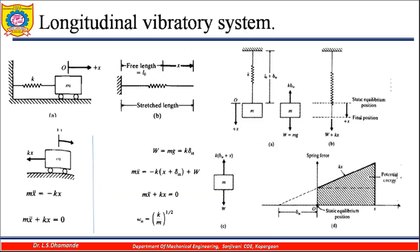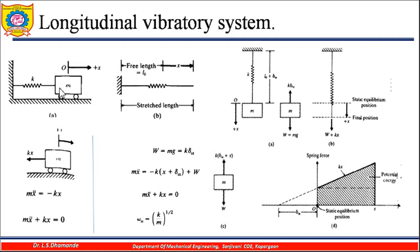Let us consider the longitudinal vibration system. In this case there is one spring and a mass attached to it. If I give a displacement to this particular mass towards the right, this spring will get stretched and will have certain tension inside. The free length of the spring will increase by displacement x, storing potential energy. Because of this, it will try to regain its original position, and this way longitudinal vibrations will take place.